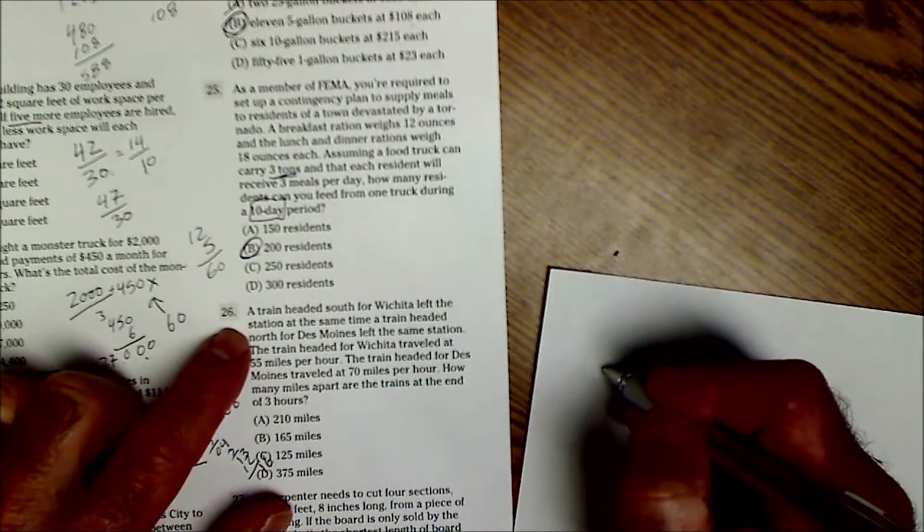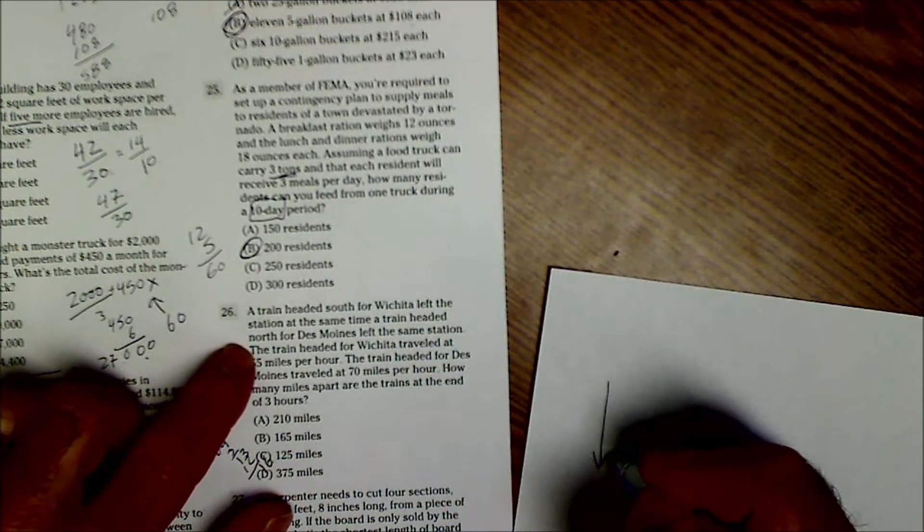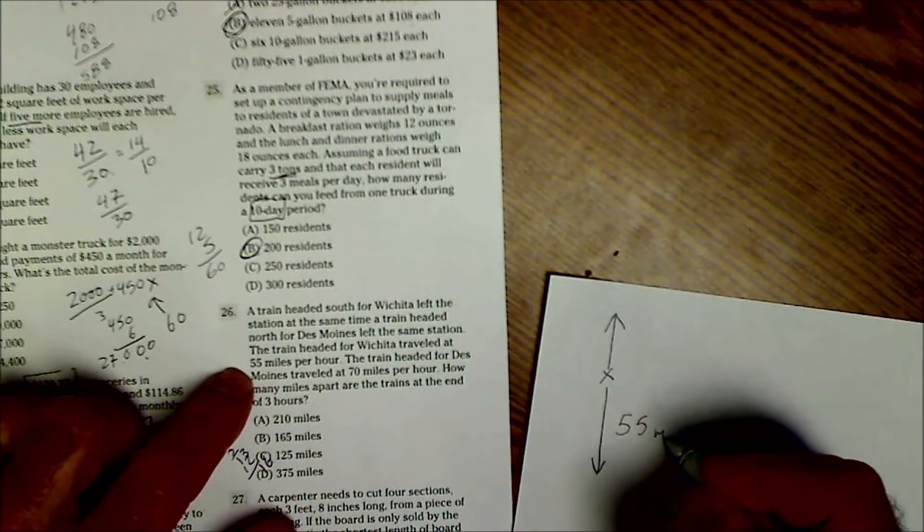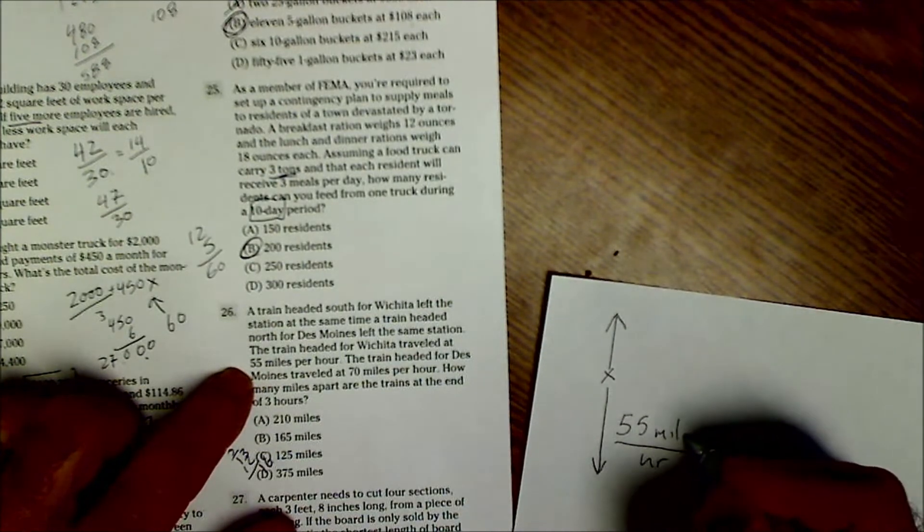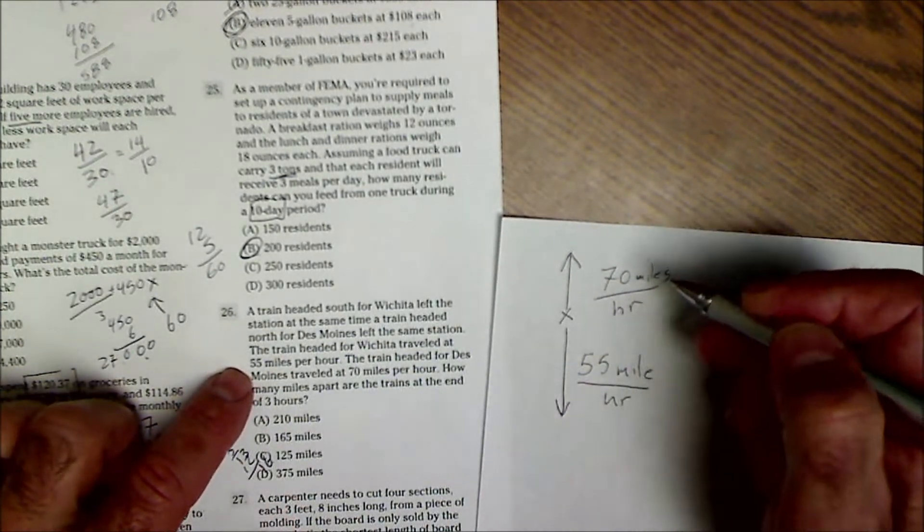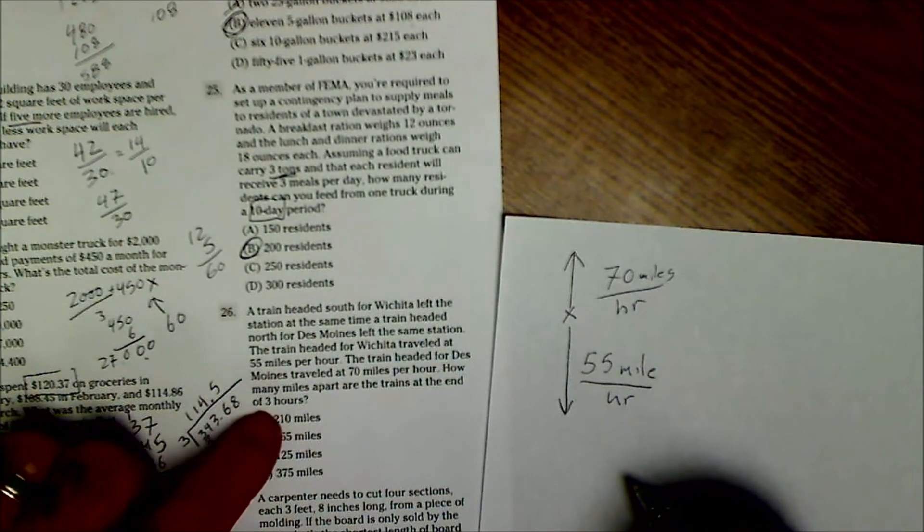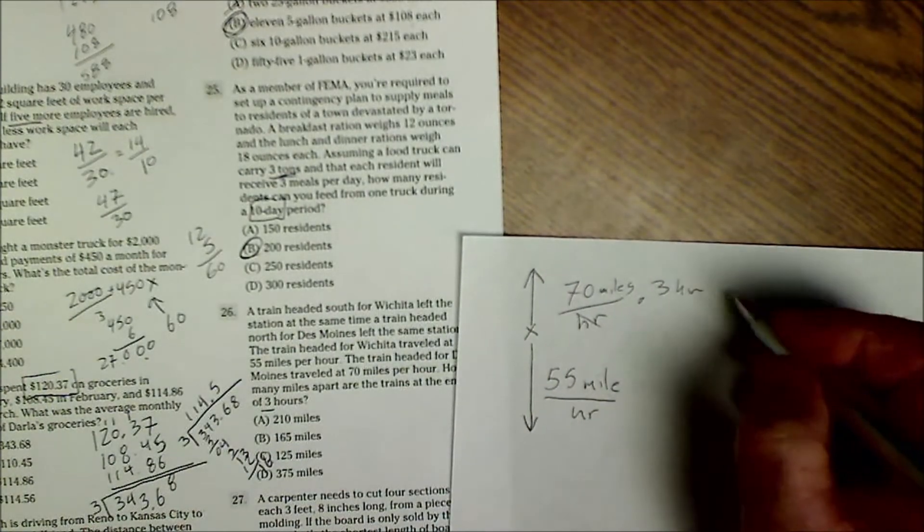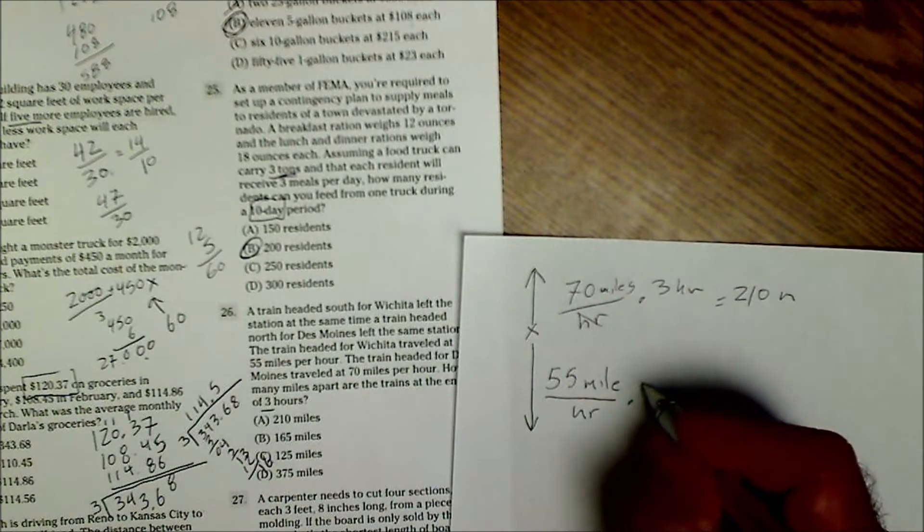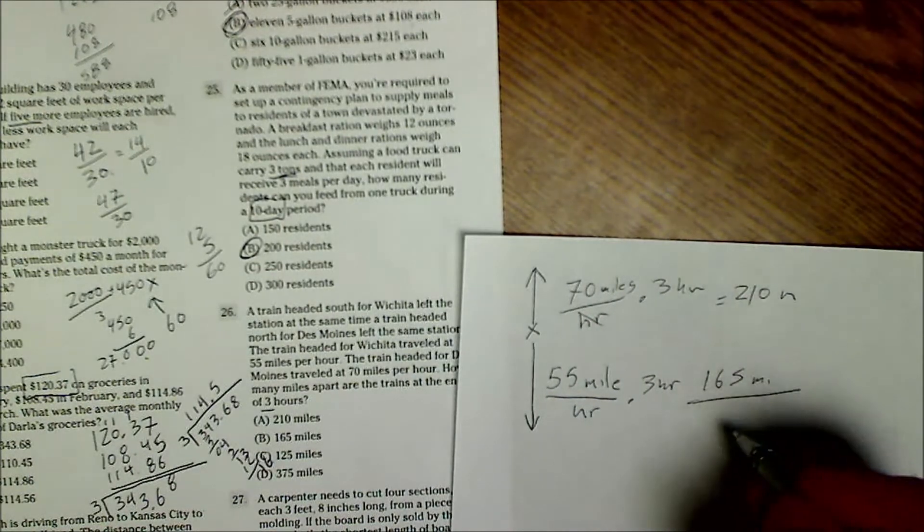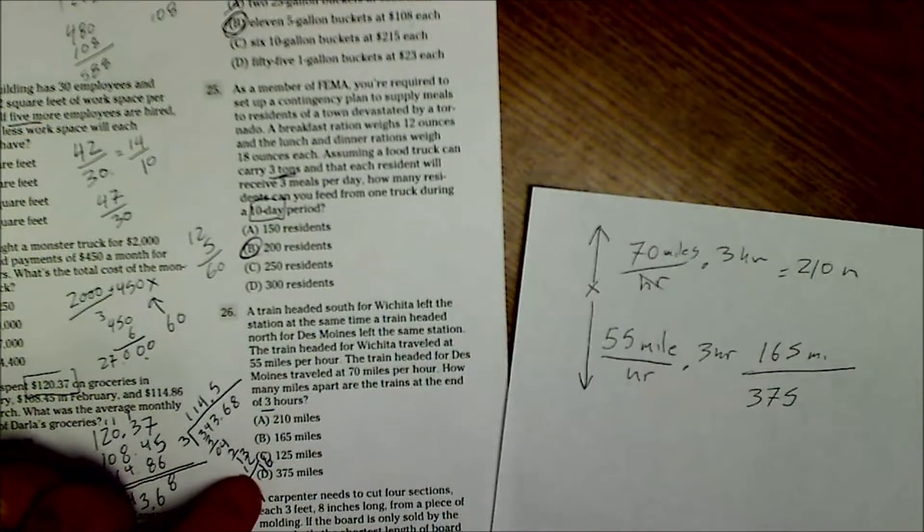Number 26. A train headed south at the same time, a train headed north. So they're both leaving from the same place. The one going south is 55 miles per hour. And then the other one is going 70 miles per hour. And then after three hours, I'm going to multiply that by three hours. That'll give me 210 miles. Multiply this by three hours. That'll give me 165 miles. So how far apart will they be? They'll be 375 miles apart. Answer D.